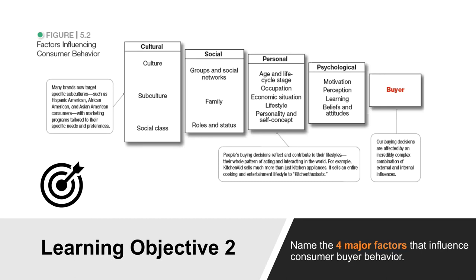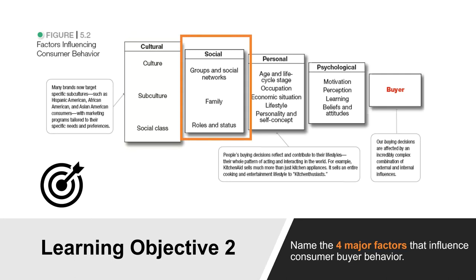The black box has four major factors — and you'll need to know these because they will be on the exam and quizzes. The first is cultural. From a cultural perspective, women need a purse — we need to carry our stuff, and women have been brought up that a purse is needed. Many of us got our first purse at one, two, or three years old. Some of us also carry backpacks or laptop bags, and that's based on subculture or social class. The social part of your black box is that you're associated with groups, social networks, and family, and your role and status in that social network also impacts your black box.